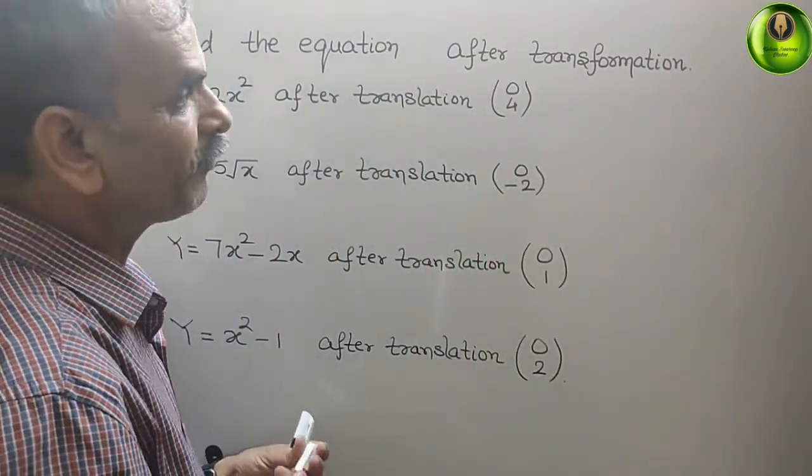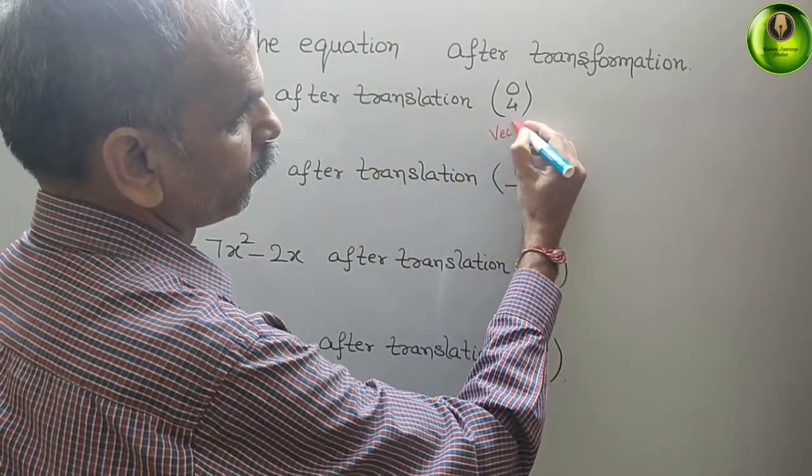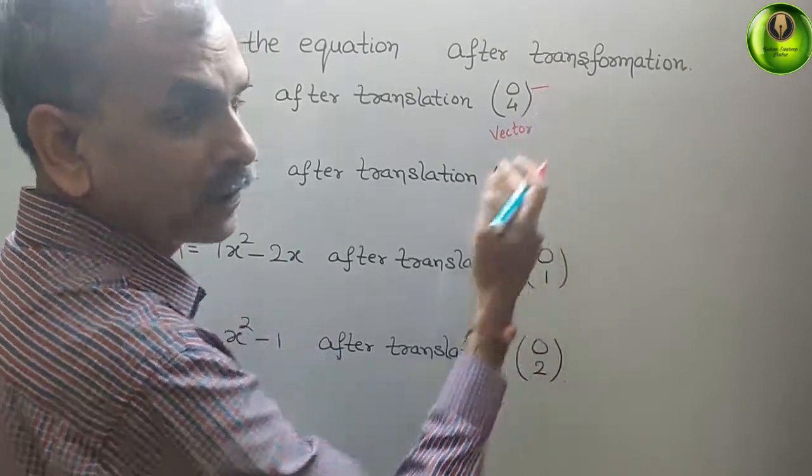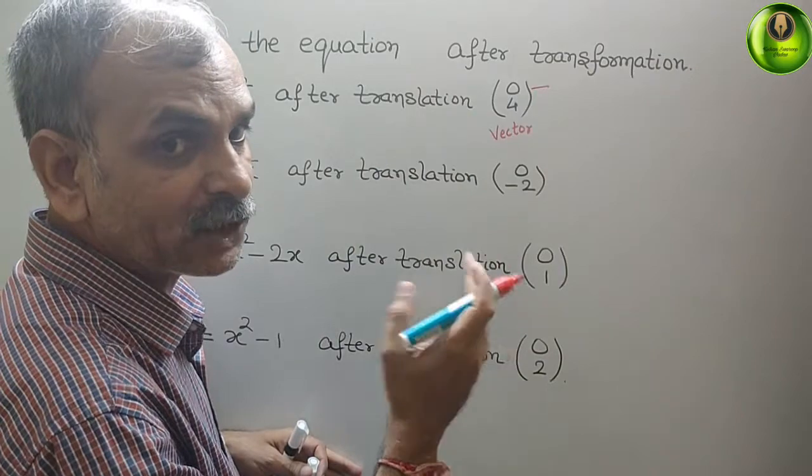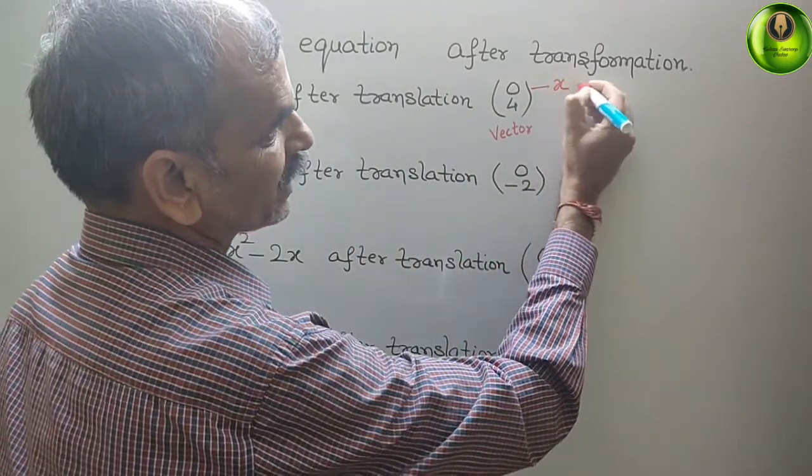So this is nothing but your vector. The first, the upper part, it will indicate the shifting of x-axis only.